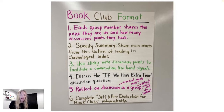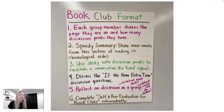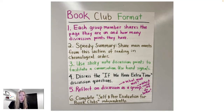The next step is to give a speedy summary — students share main events from each chapter or section in chronological order. This gets summarizing out of the way. In a lot of small group discussions, students get stuck just summarizing and don't dive deeper. The speedy summary centers everybody on what happened in the text, and then it's time to talk about it.